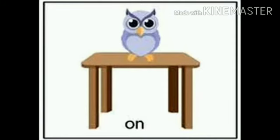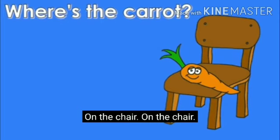See the picture here. An owl is sitting on the table. On means when something touches a surface. See here, book is on the table. Carrot is on the chair.